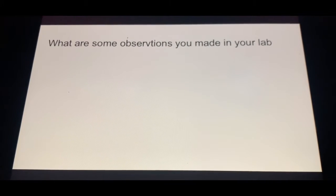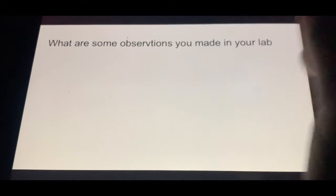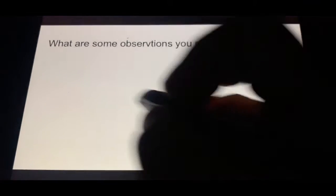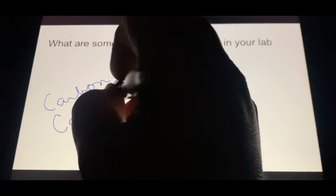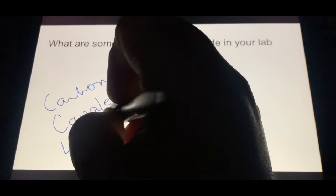I started off with asking the students, what are some observations you've made in your lab? One of the things was I had you look at the compounds that started with carbon. If they start with carbon, they're going to be covalent. One of the things you'll see is that you have lower melting points.